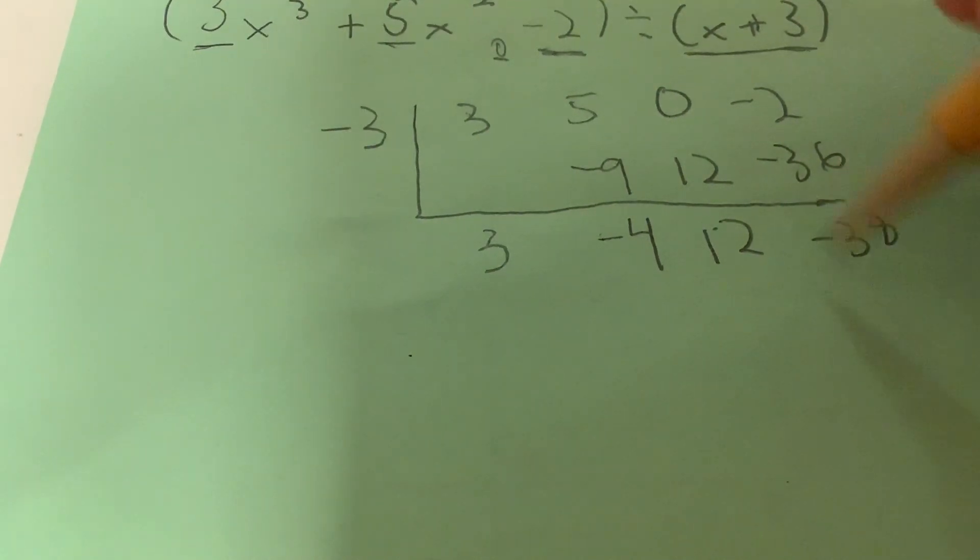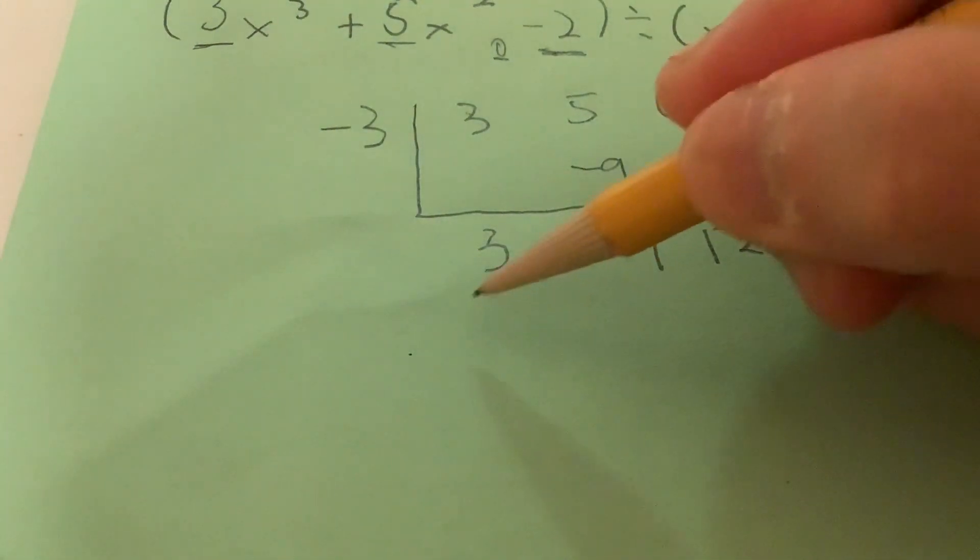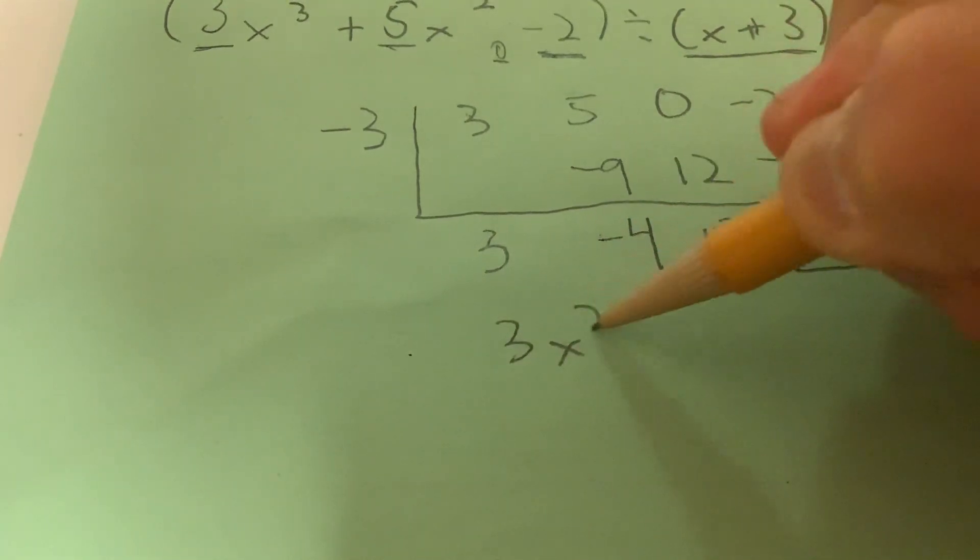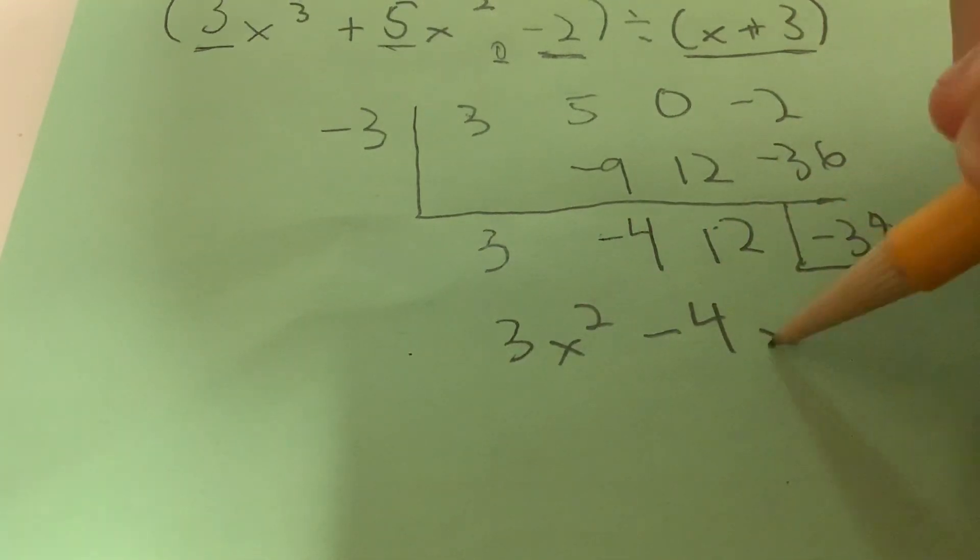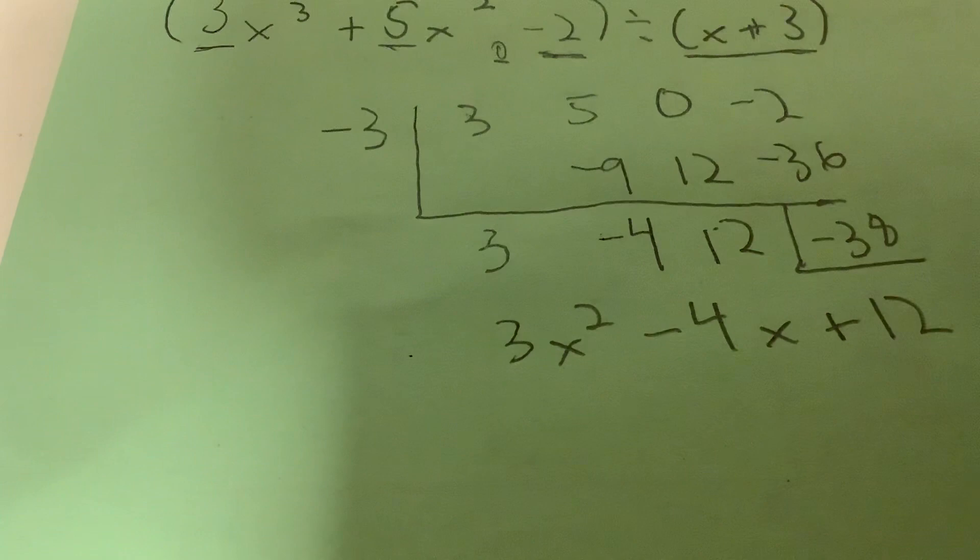And this last number right here, this is your remainder. So, it's going to be equal to 3x squared minus 4x plus 12. And the remainder will be negative 38.